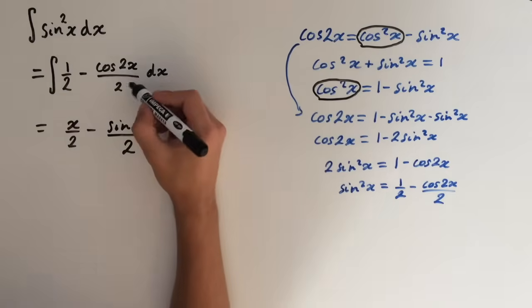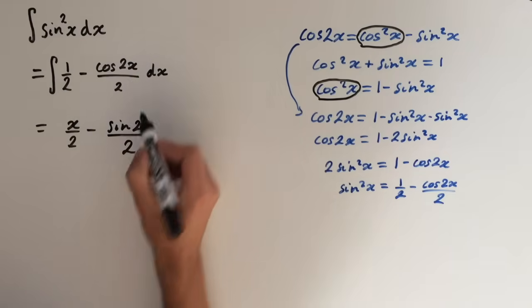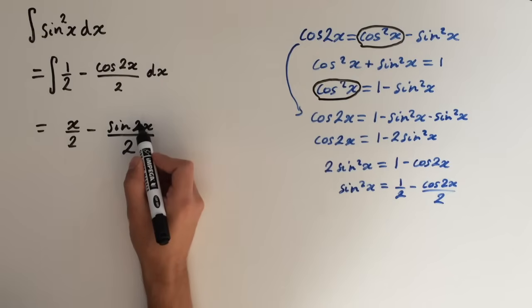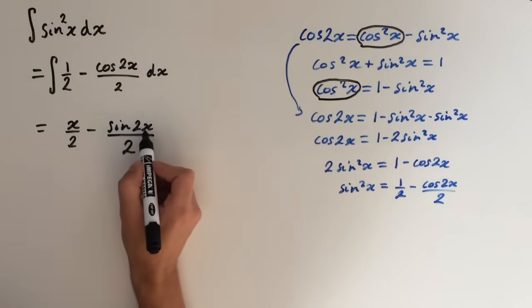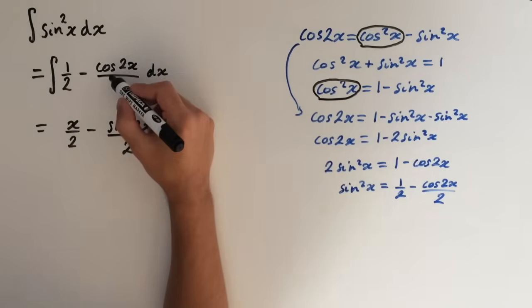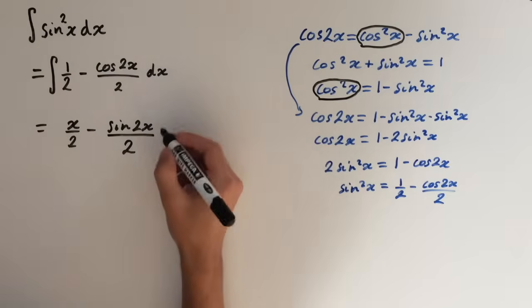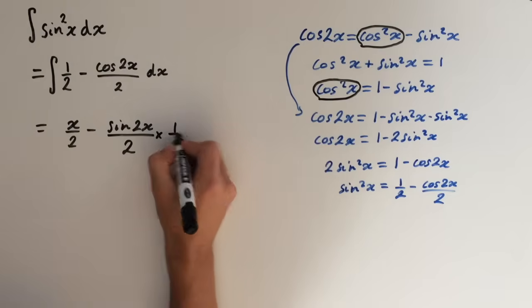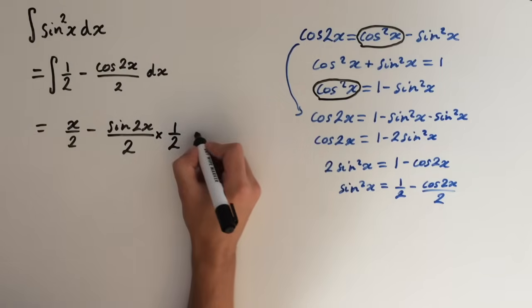But we need to think about the reverse chain rule. So if we were to differentiate this, we'd have to differentiate sin to get to cos. And that would give us this, but we'd also have to differentiate inside the function. So we'd multiply by 2. So if we integrate this, we need to reverse that essentially. So we have to multiply by 1 half. And this is plus c.